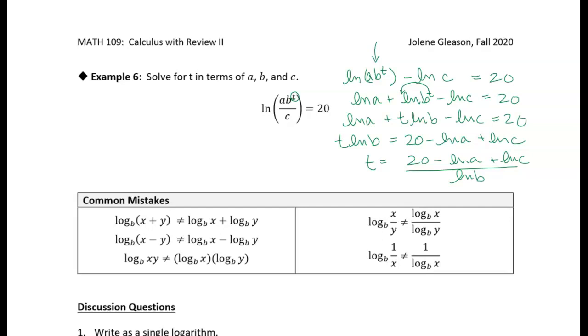That doesn't work. It's the log of a product that gives you the sum of the logs. Same way with the difference. We can't take the log of a difference and get the difference of the logs. That doesn't work. It's the log of a quotient that gives you the difference in the logs. Like the log of a product, the log of a product is the sum of the logs, not the product of the logs. So don't make these mistakes.